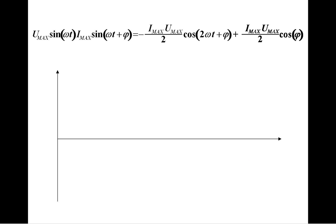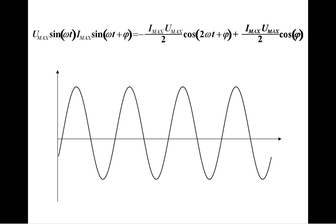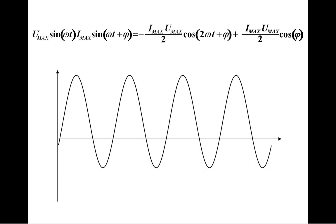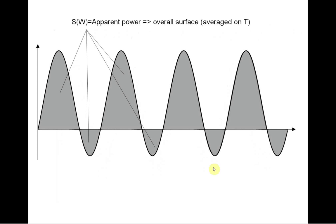In terms of diagram surfaces, what is apparent and what is reactive power? Apparent power is the average surface between the x-axis and the fluctuating component on frequency twice that of the mains.